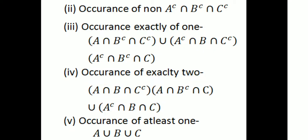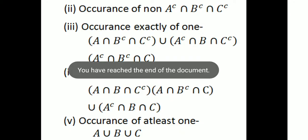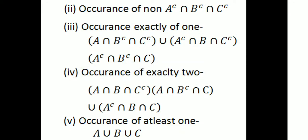Then occurrence of exactly two and occurrence of at least one are also covered. Occurrence of at least one is A union B union C. These are the set operations and their Venn diagram representations.